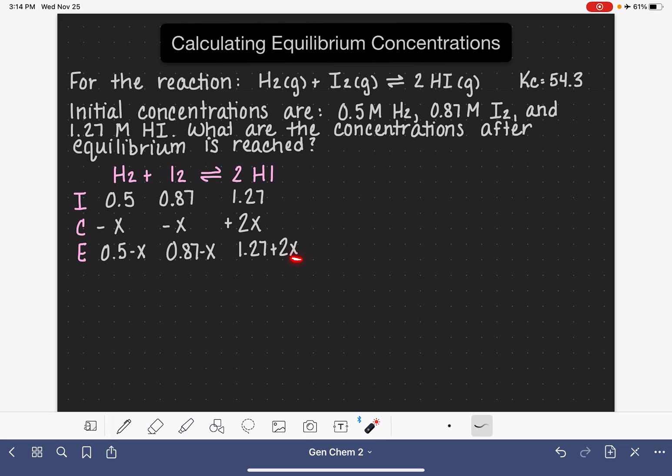If we can figure out what X is, we will know what the ending concentrations are once the system has reached equilibrium. This row right here contains the answer to the question that we're trying to solve.